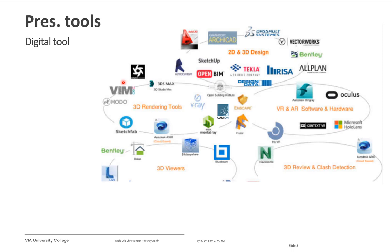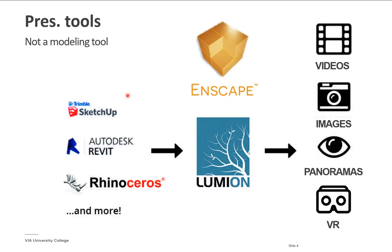There are a lot of different tools for rendering — this is only a small list of what you can find. Some software is designed for 2D and 3D design and is not necessarily good for rendering. Enscape and Lumion are not modeling tools, so the workflow is to model in SketchUp or Revit and then take that model into Enscape or Lumion to create videos, images, panoramas, and even virtual reality.